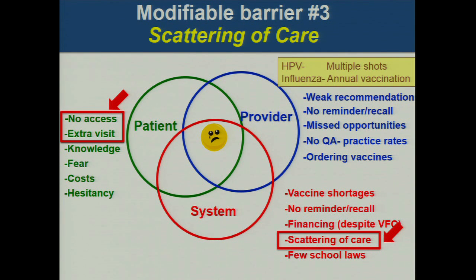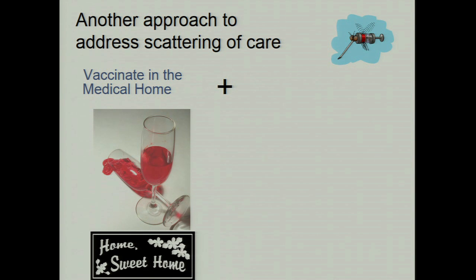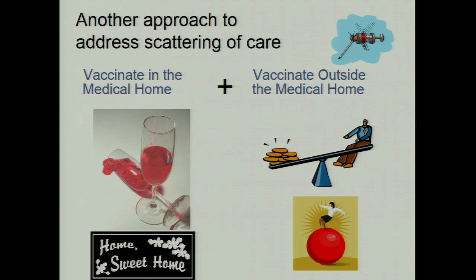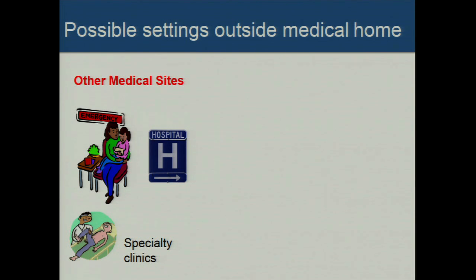The third modifiable barrier is scattering of care, which shows up in patient, provider, and system barriers. High vaccination rates for most vaccines are due to primary care, but we're having trouble with flu and HPV vaccines. Another approach is to vaccinate in the medical home plus potentially outside of it — though this is controversial. Looking at settings outside the medical home: other medical sites like EDs, hospitals, or specialty clinics have been studied but don't see that many kids at the population level. So the most likely non-medical sites are probably schools.